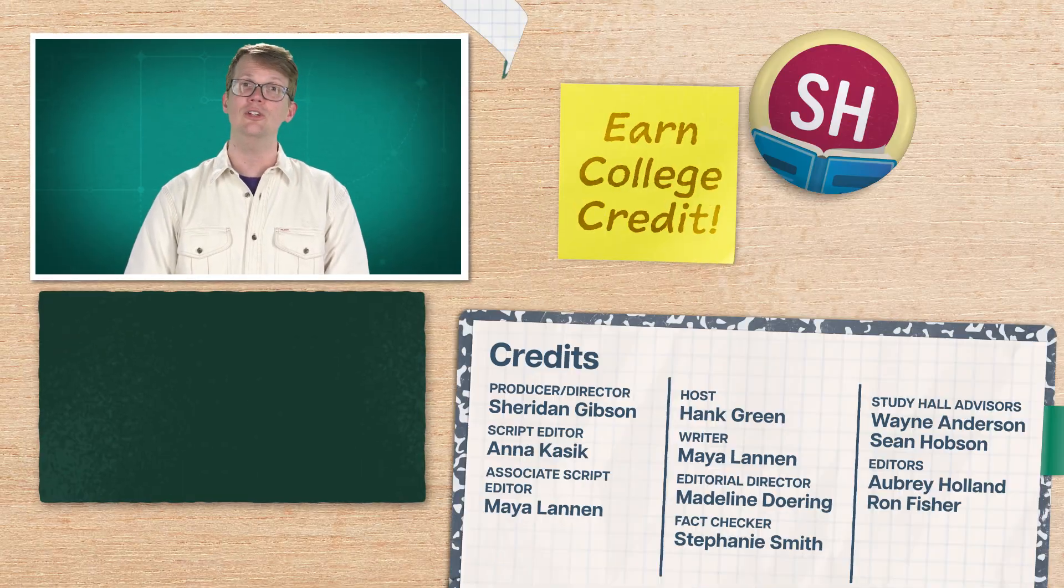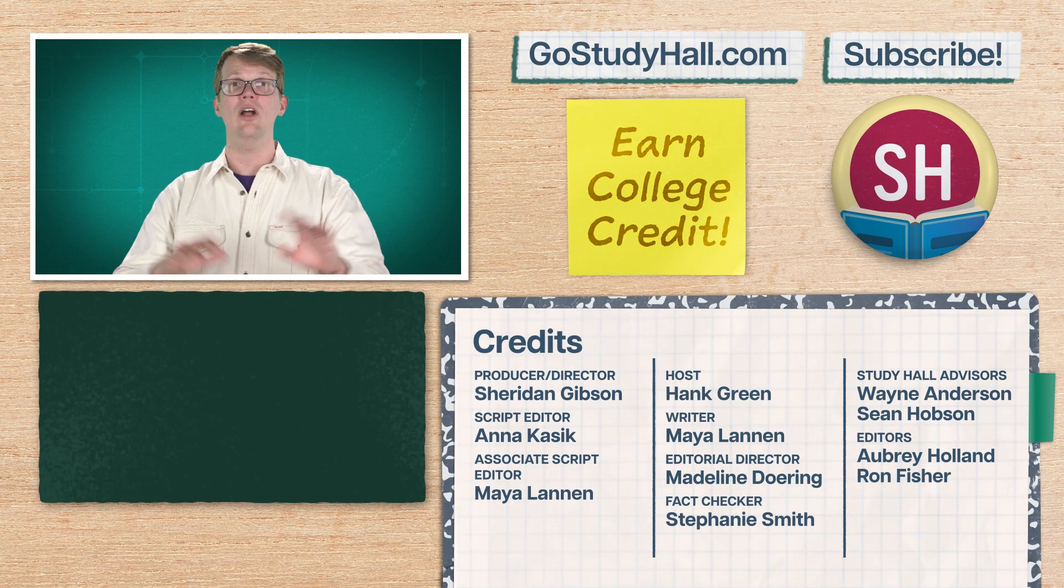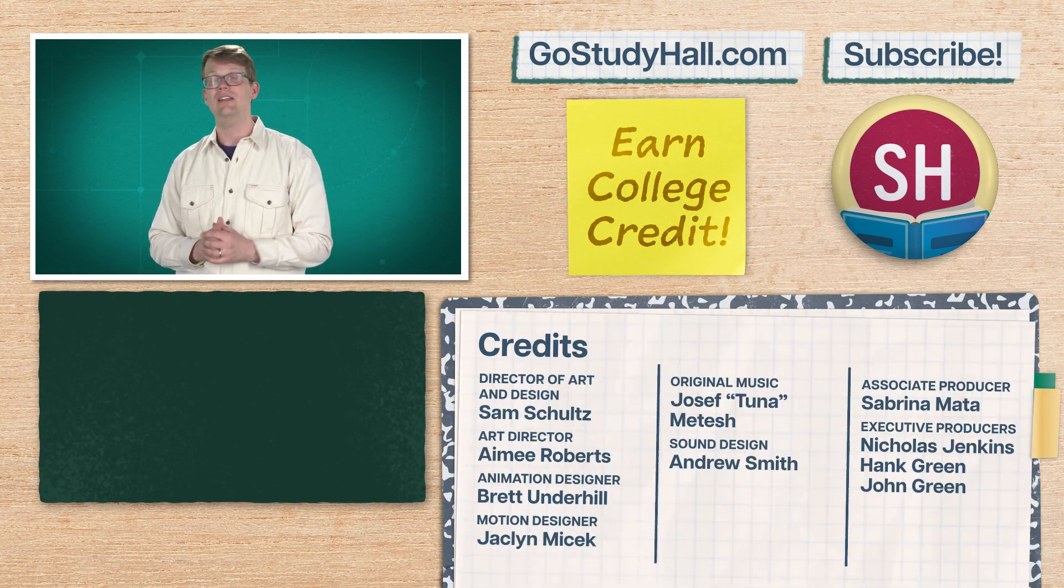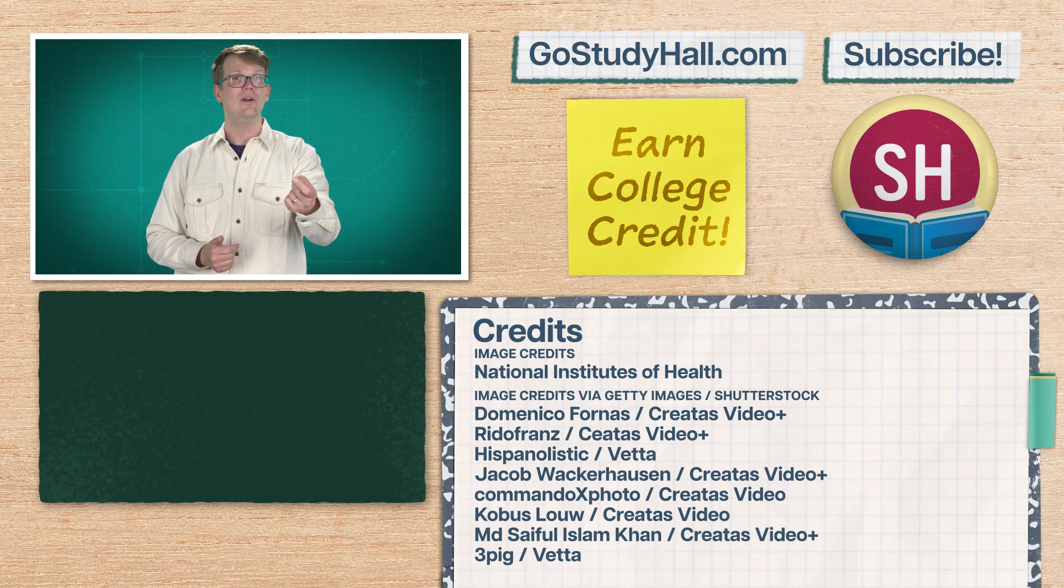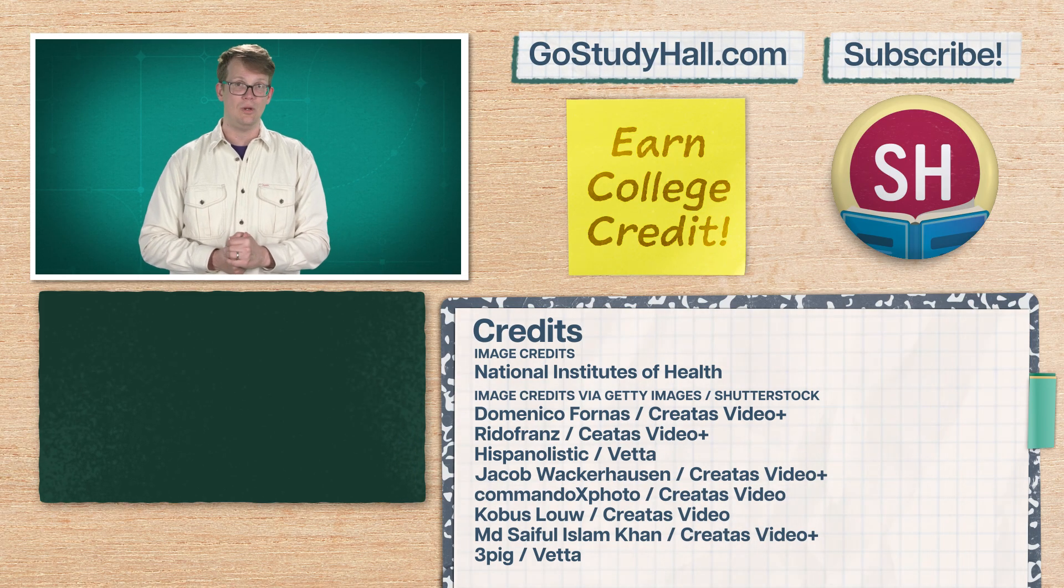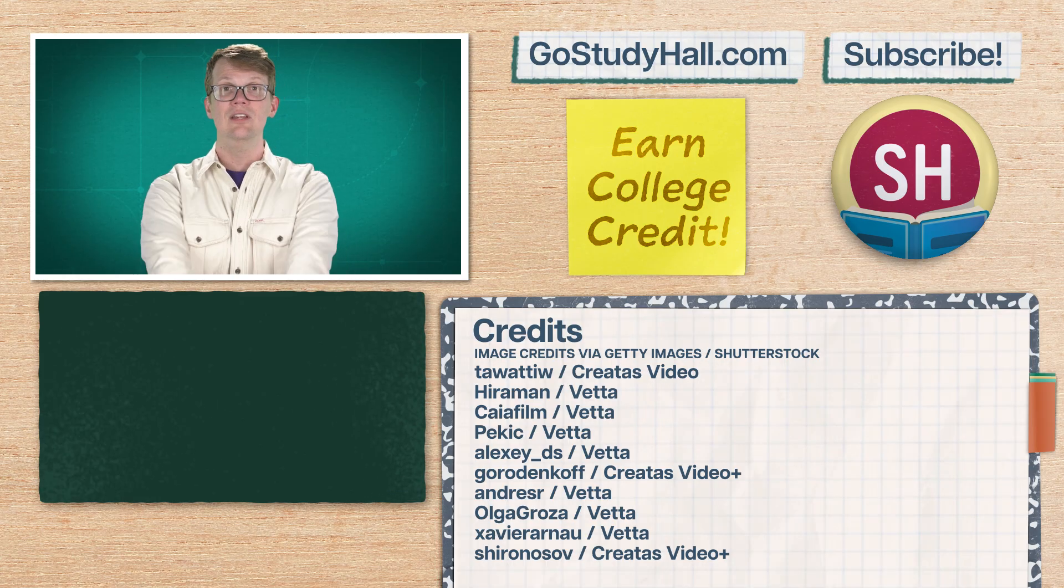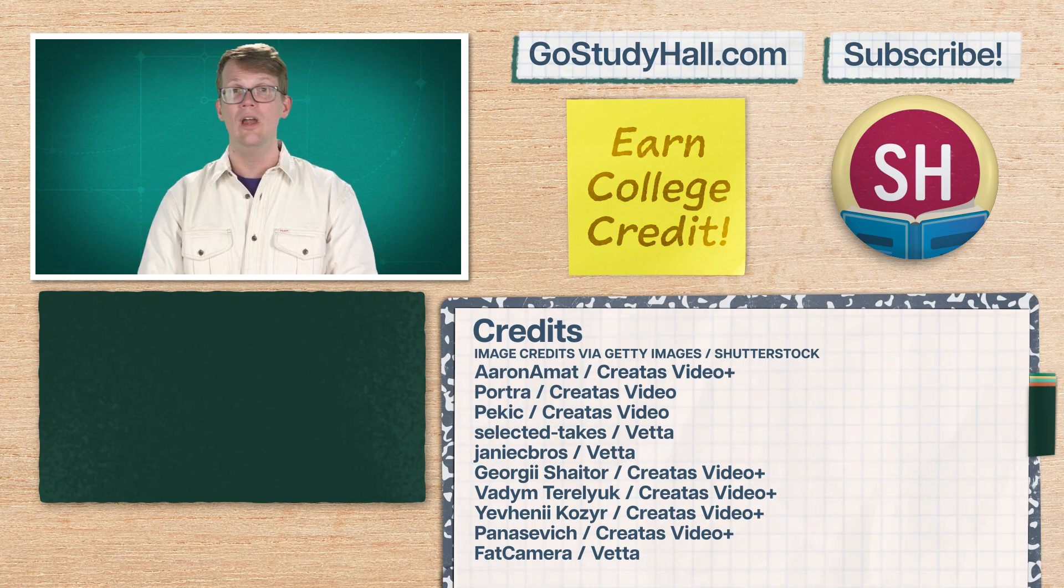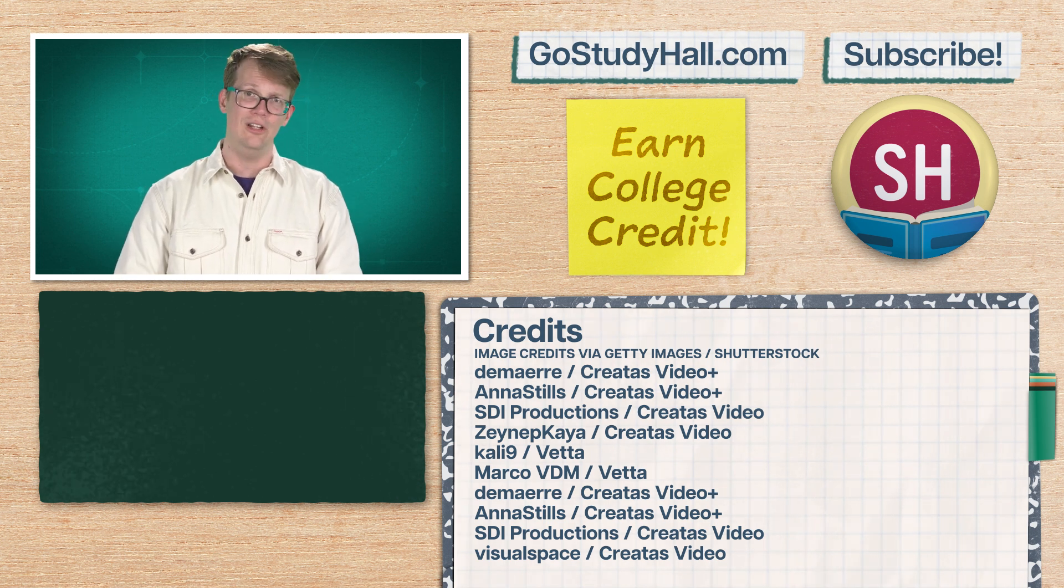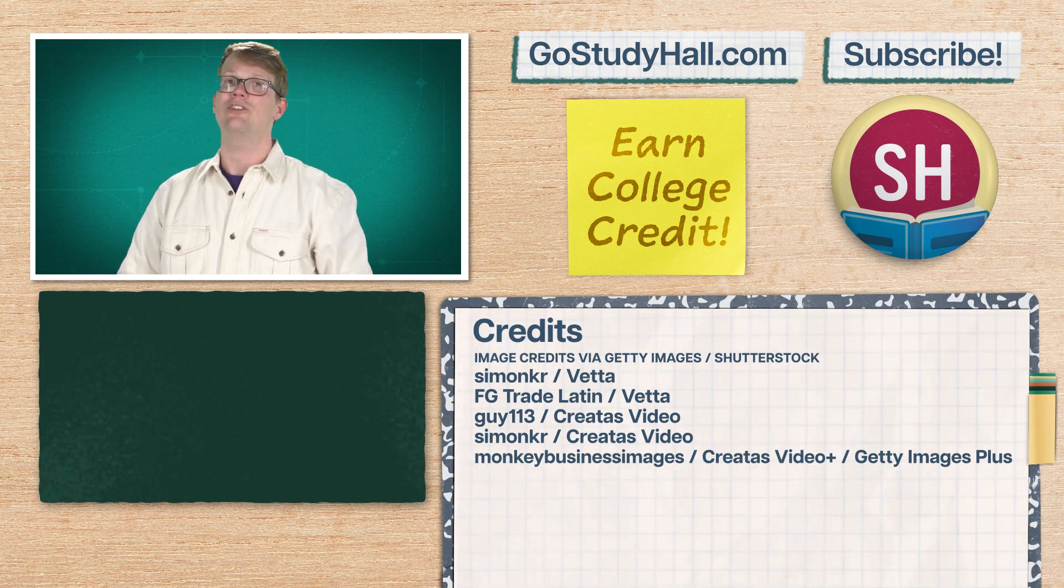If you want to investigate more degrees before you choose a major, check out our other videos in this playlist. To find out how to earn college credit with Study Hall, you can go to GoStudyHall.com or click the link down here in the description. Also, if you want to help us out, you can give this video a like and a comment to let us know how you chose your degree or what you wish you had known before you started your degree. Thank you for watching.